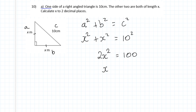And then of course, when we're trying to get rid of the squared, we need to do the opposite, which is the square root, and so we end up with x being equal to the square root of 50.